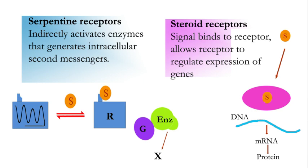Steroid receptor: the steroid hormone acts as a signal. The steroid hormone diffuses across the plasma membrane and binds to the receptor. This hormone binding results in a conformational change, and this complex moves into the nucleus. This interaction at the intracellular domain gives rise to an increase or decrease in the rate of gene transcription.